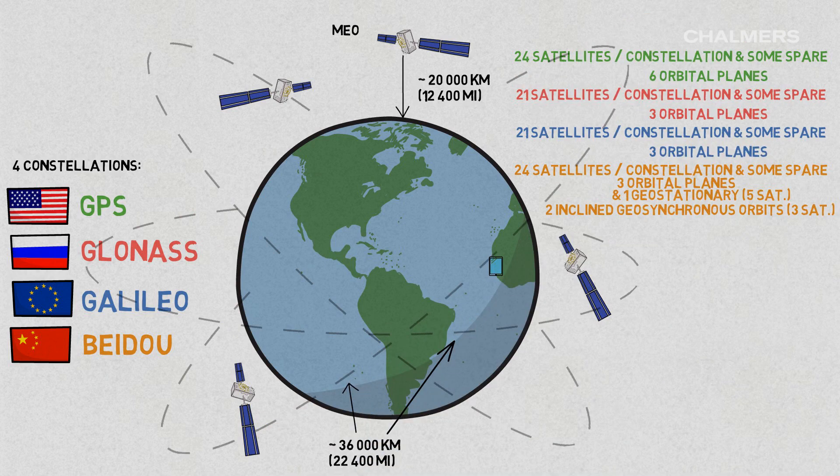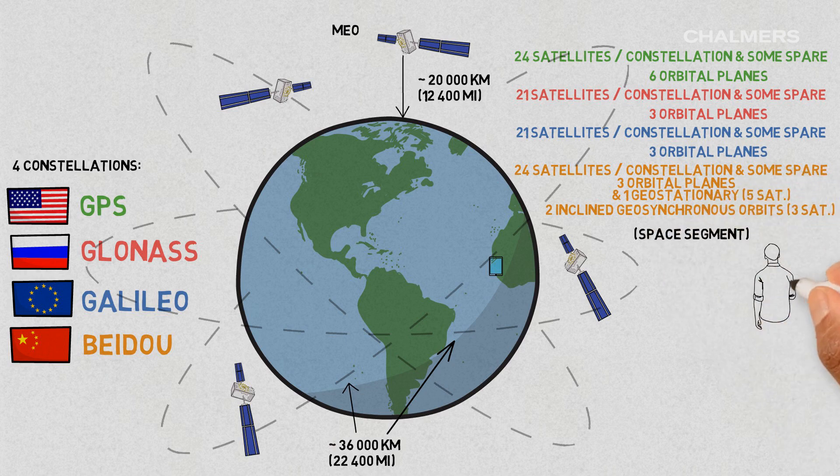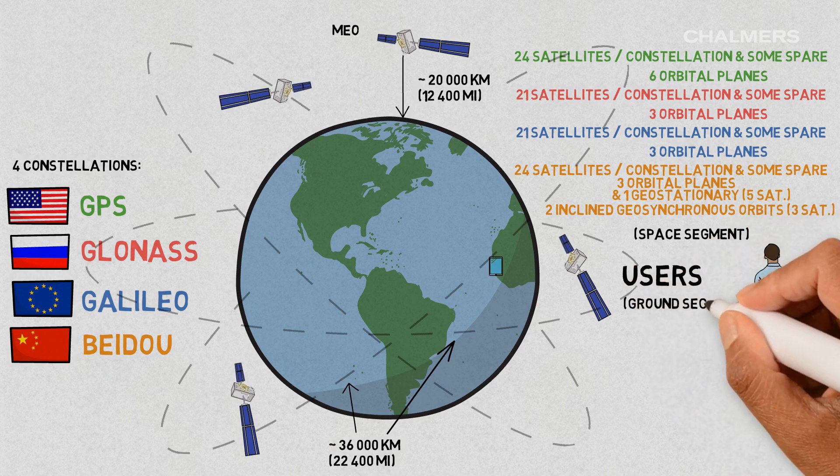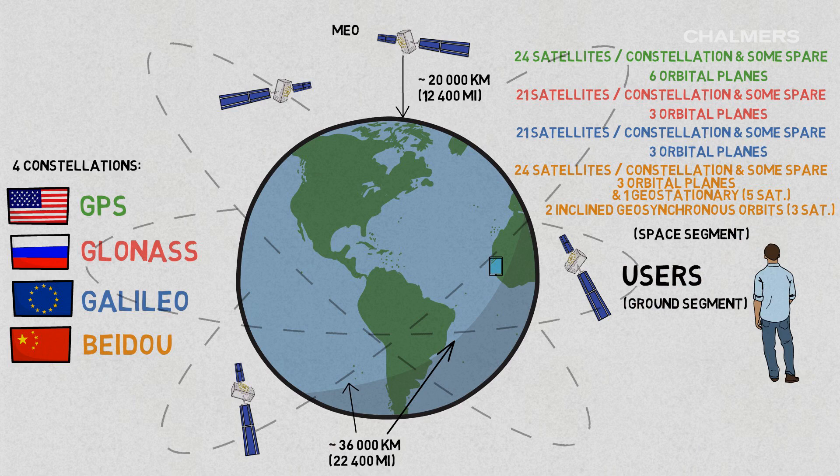Each global navigation satellite system consists of three segments. The satellites orbiting the Earth form the so-called space segment. Then there are we, the users, and we form the so-called ground segment.